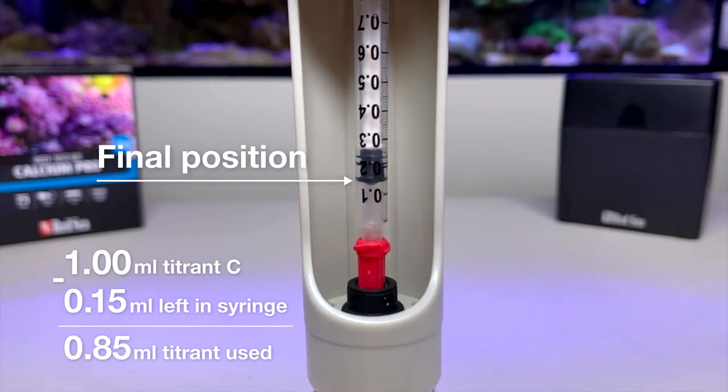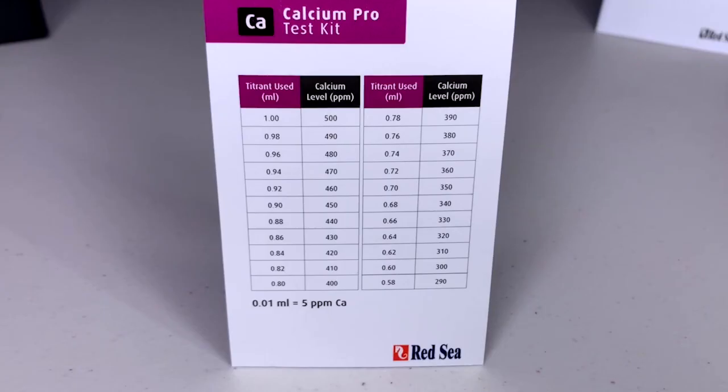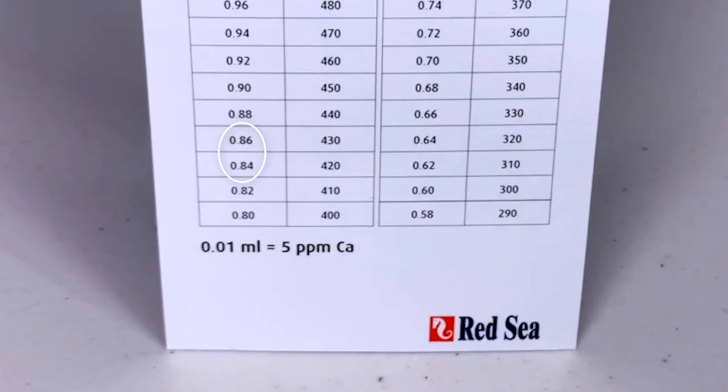Now we look on the card. On the back of the card, there is a table. And we look for 0.85. There isn't 0.85 but there is 0.84 and 0.86. The midpoint between them gives us a reading of 425 ppm of calcium.